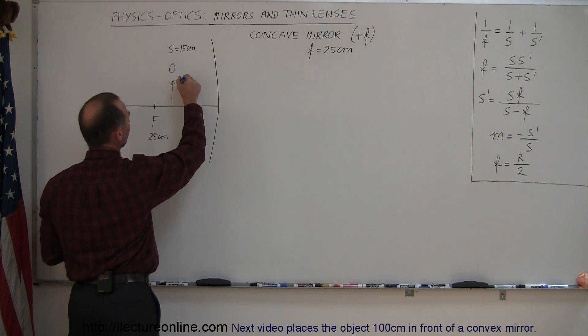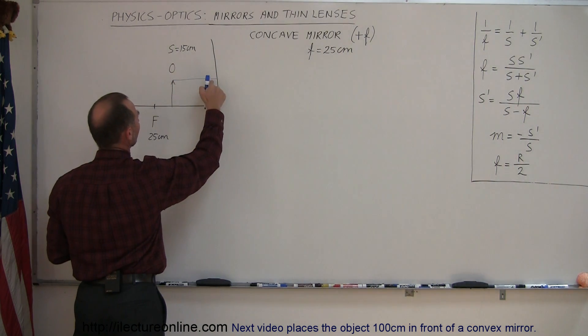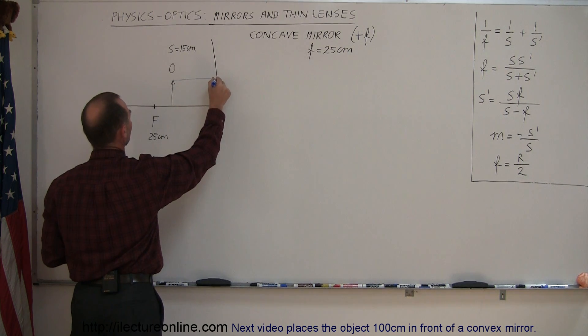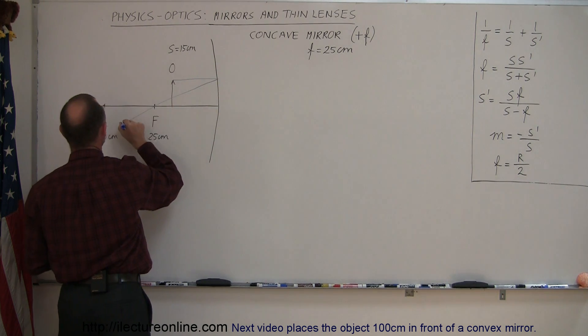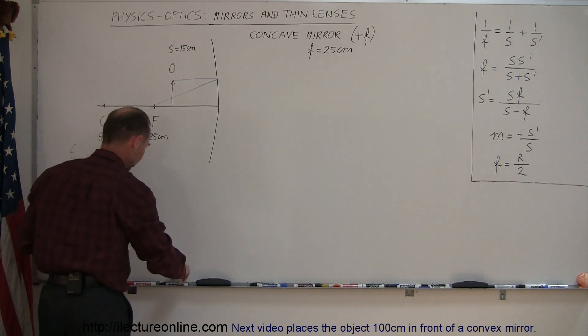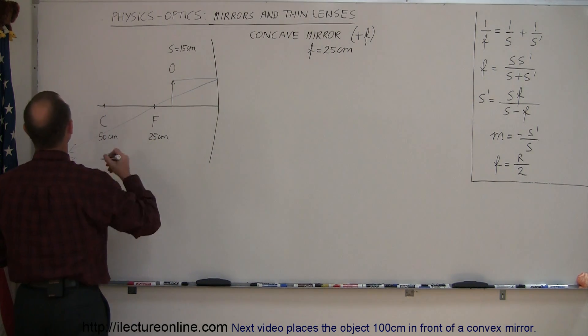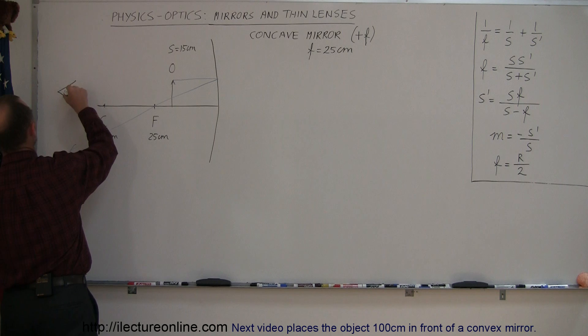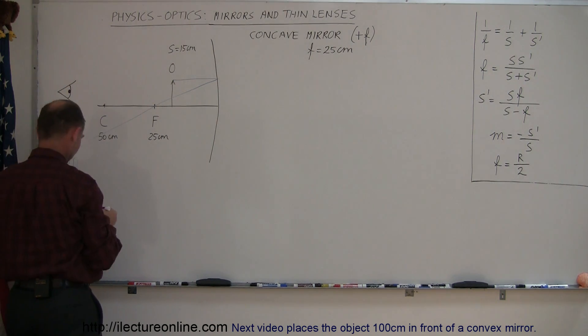The first ray that we draw is parallel to the normal until we hit the mirror. When we hit the mirror, it gets reflected through the focal point and it goes this way. So that's ray number one. Of course, don't forget that we have an observer. An observer is looking into the mirror like this. So the little eyeball right here represents our observer.